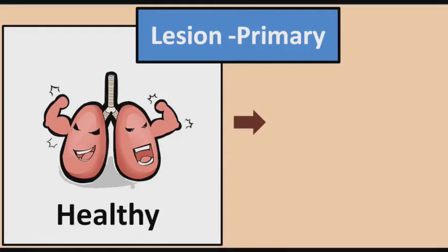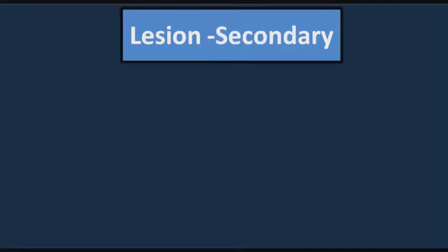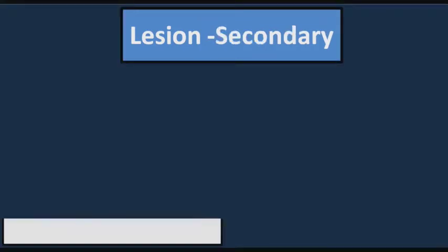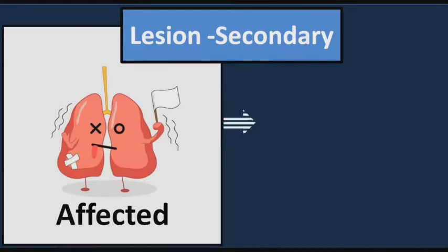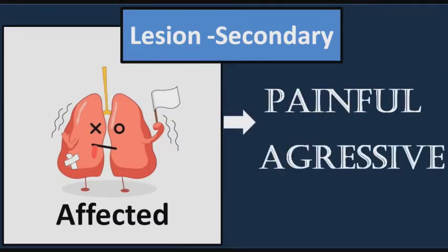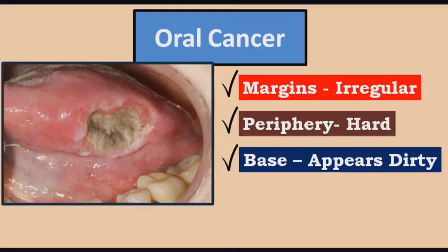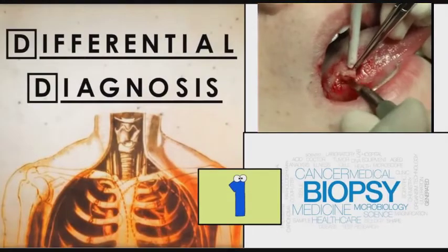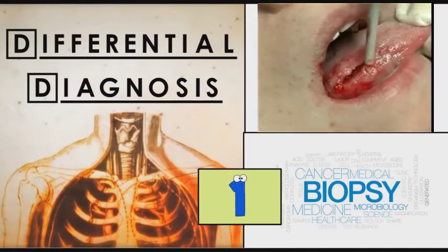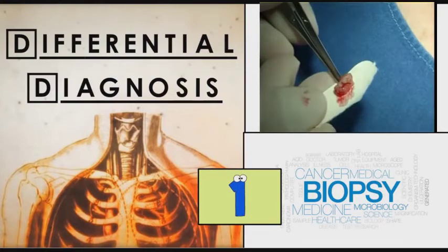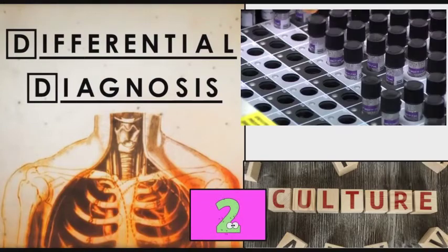The primary type of lesions are painless ulcers, but the secondary type of lesions have a lung component and are painful, aggressive, and look very similar to oral cancer with irregular margins, a hard periphery, and a dirty appearing base. The best way to differentiate and confirm them is through a biopsy and a bacterial culture.